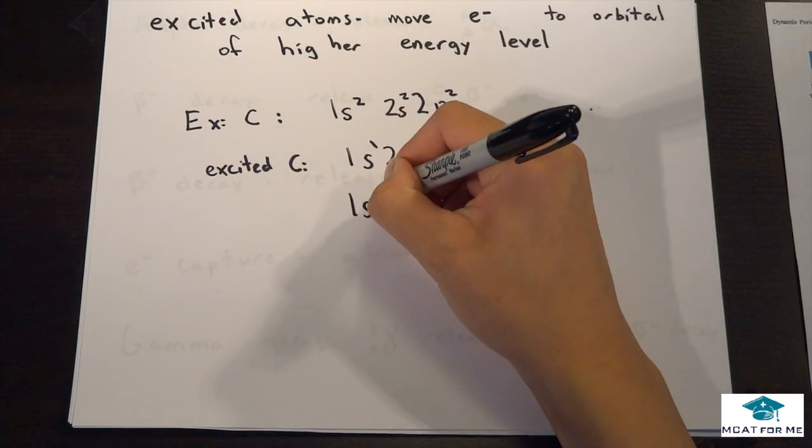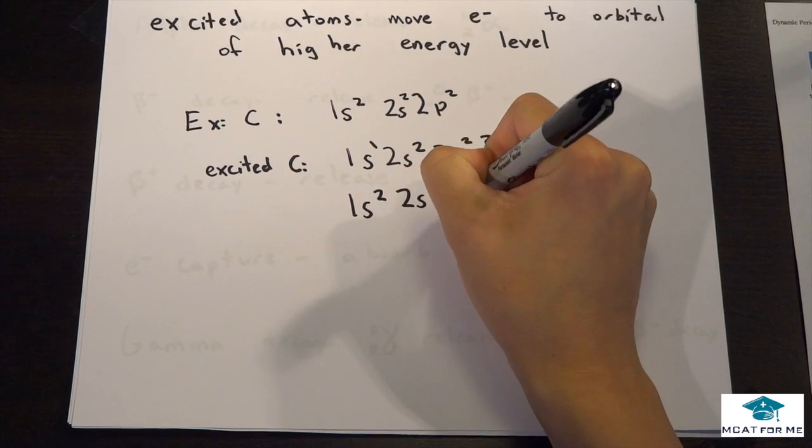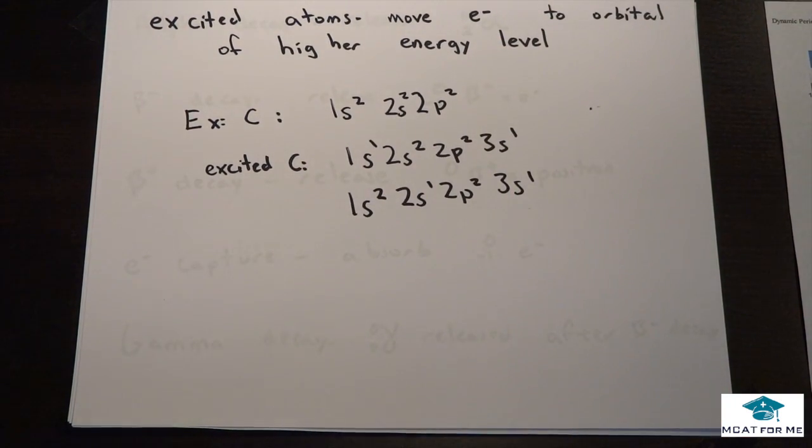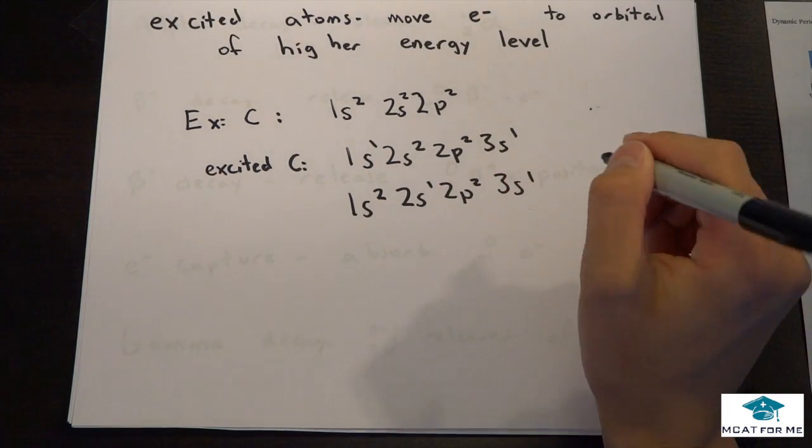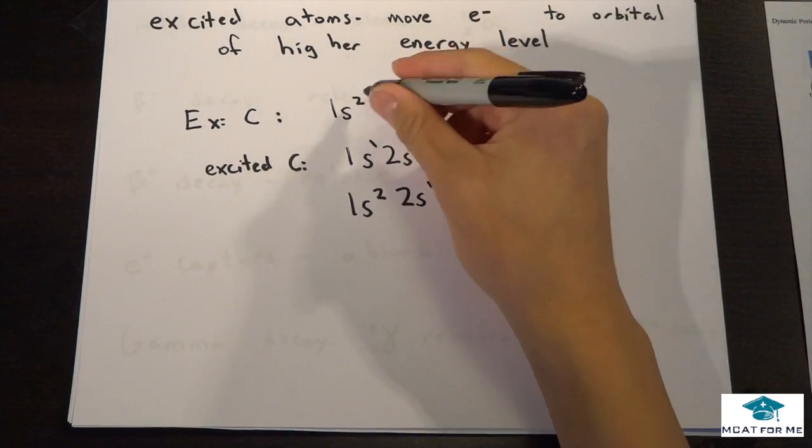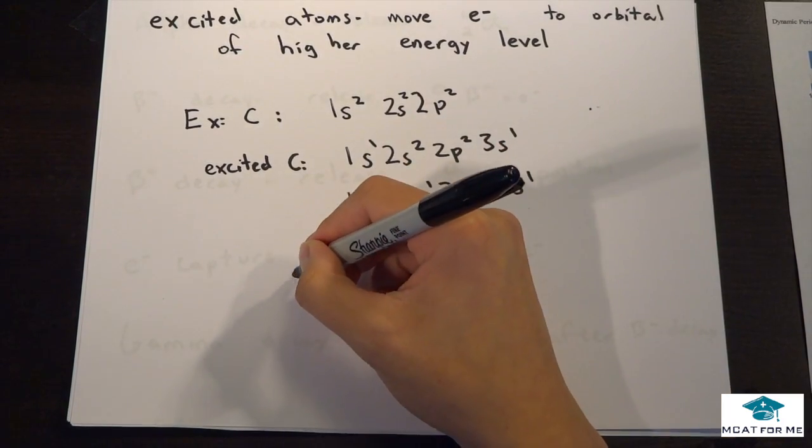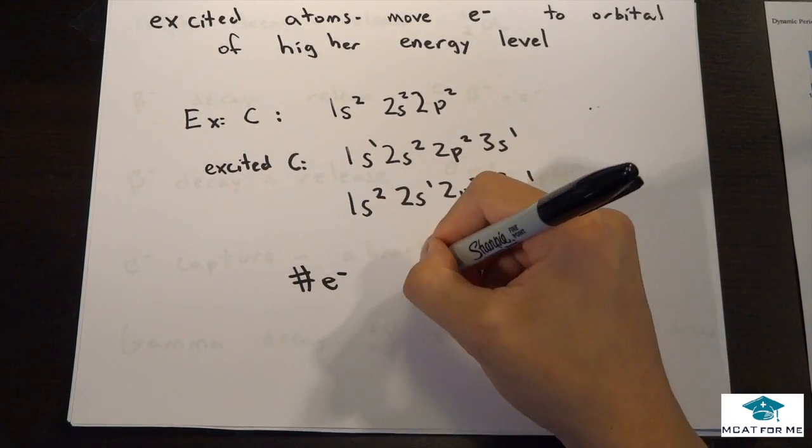Another example could be, so we took now a 2s electron and we moved it all the way up to the 3s. But notice we never change the number of electrons. If we count it, we have 6. We count here, we have 6 and 6 here. So the number of electrons never changes.